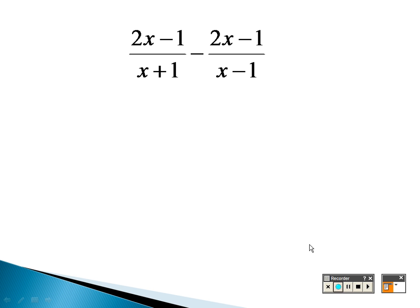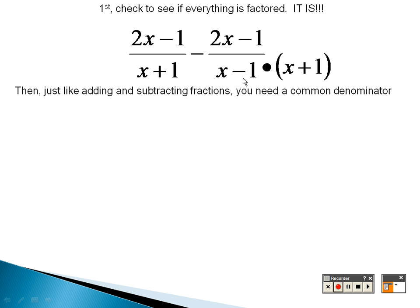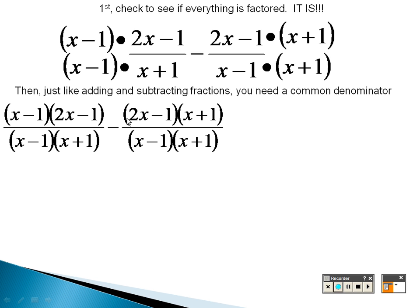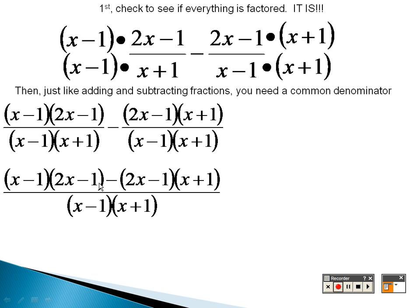Taking a look at this problem now, I need to find common denominators. This is an x plus 1 and this is an x minus 1 — very close but not the same. So I'm going to find common denominators: x plus 1 on the bottom here needs to be on the top here. But this side doesn't have an x minus 1, so I'm going to multiply by x minus 1 on both sides. I end up with x minus 1 times 2x minus 1 on one side, and 2x minus 1 times x plus 1 on the other, with the same bottoms. I'm going to have to combine them.